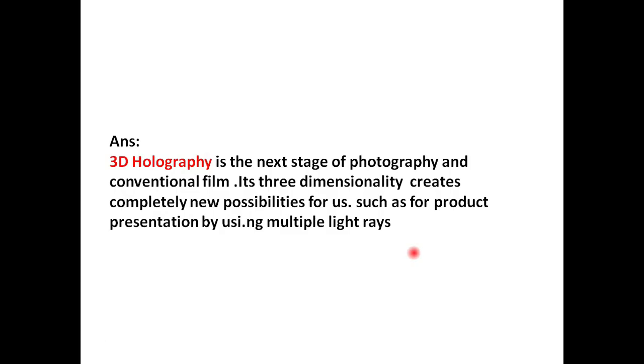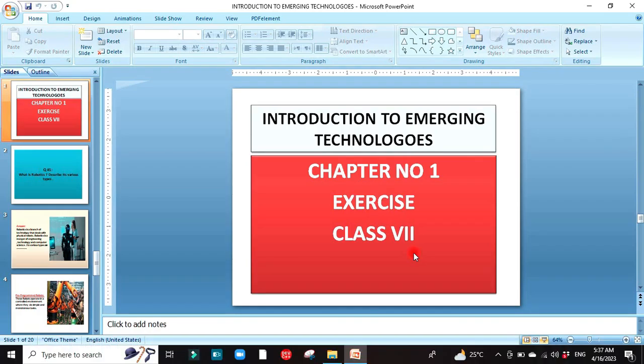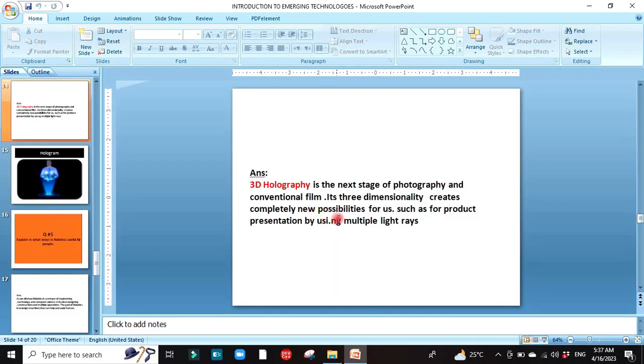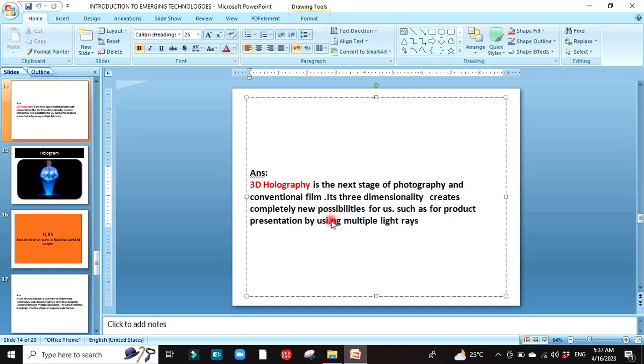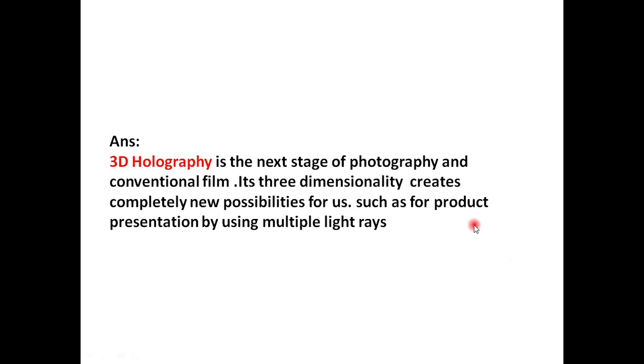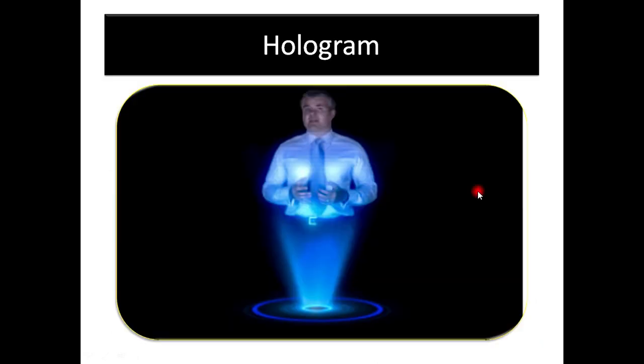Question number four: Explain how a 3D hologram displays. 3D holography is the next stage of the photography and conventional film. Its three dimensionality creates completely new possibilities for us such as for product presentation by using multiple lights. This has been a little mistake so I'm going to remove that through the current image. So I am just going to remove it and now it's perfectly. Because this video is already, as far as follow student yang also has mistakes.